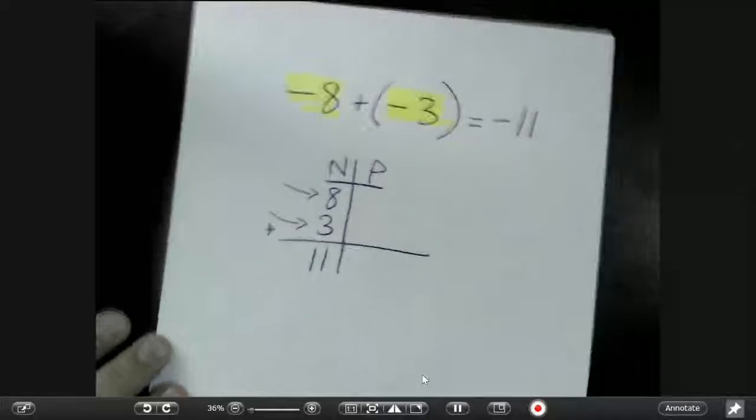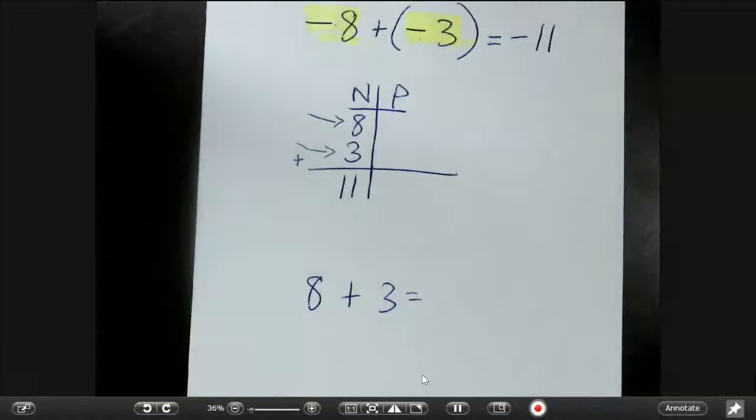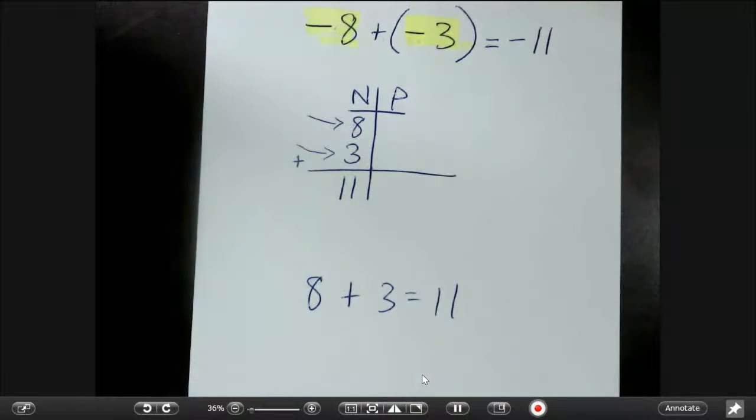Well, what if it was the same thing except for all positive? Well, that's what you guys have done since kindergarten. That's just 8 plus 3. Well, 8 plus 3 is 11.